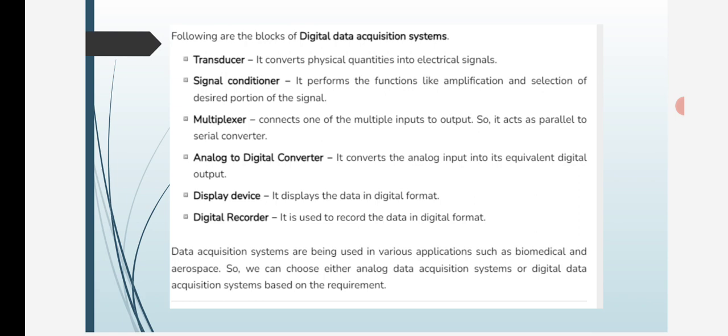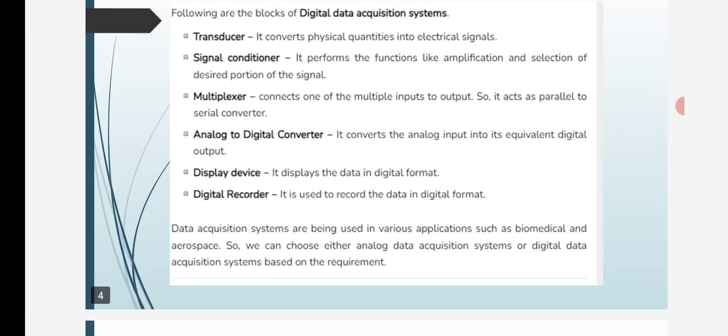Analog to digital converter converts the analog input to its equivalent digital output. Display device displays the data in digital format. Digital recorder is used to record the data in digital format.